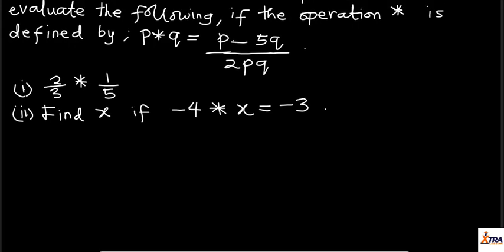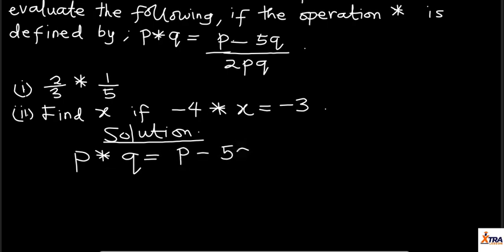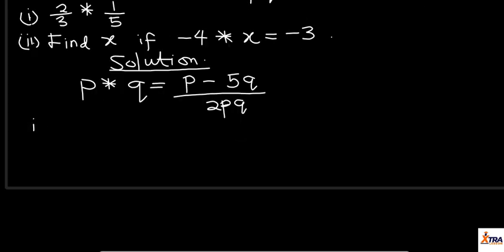So, the very first thing I'm to do here is to bring out my parameters, which in this case is my operation. That is, P operation Q is given as P minus 5Q all over 2PQ. So, for number one, I have 2 over 3 operation 1 over 5.